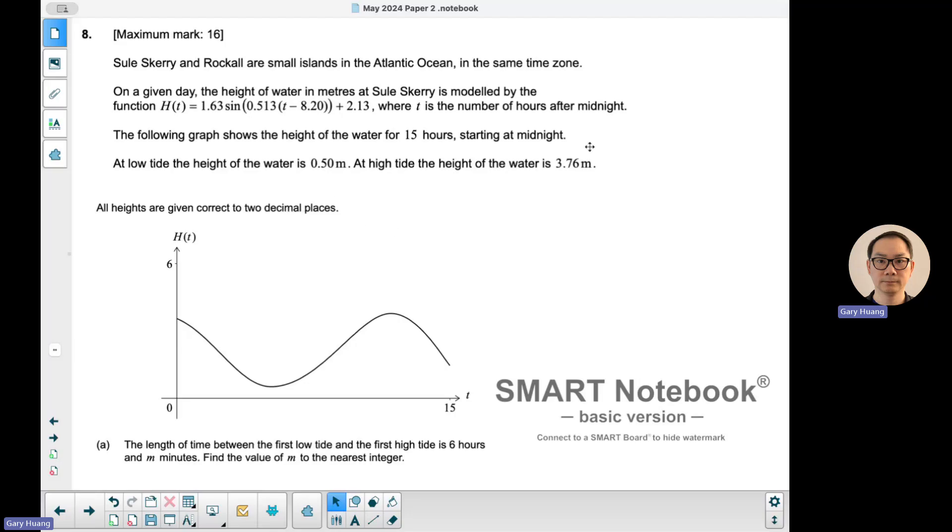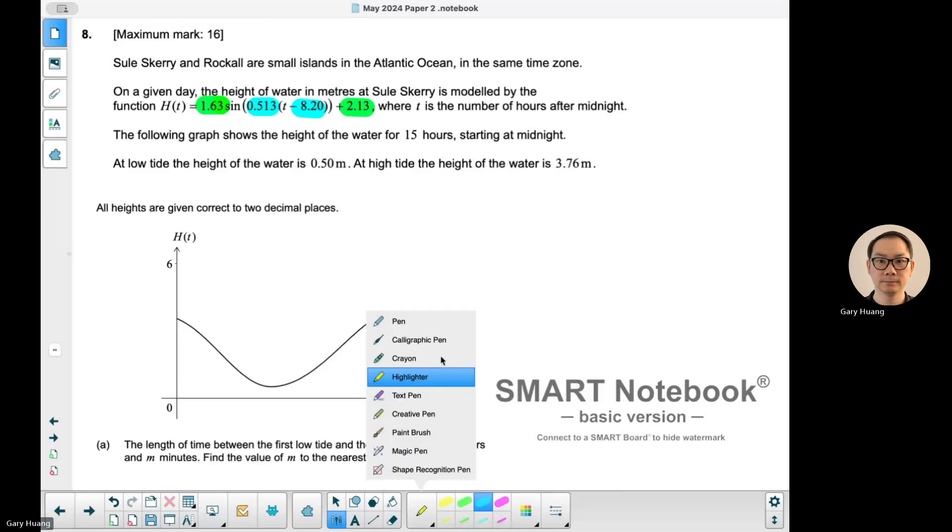You can see this is a trigonometry or modeling question. You're given the equation with all the parameters: A, C, K, and D. You're given a sketch from 0 to 15 hours starting at midnight. Low tide, the height is 0.5, so the lowest point is 0.5, and the highest point is 3.76.